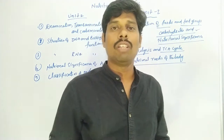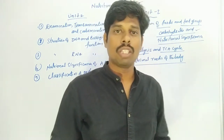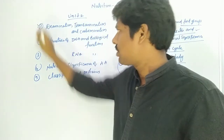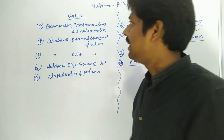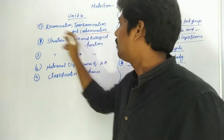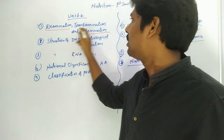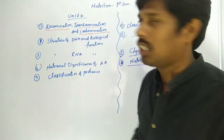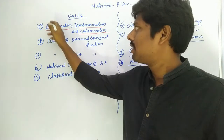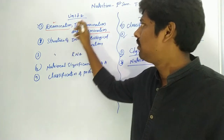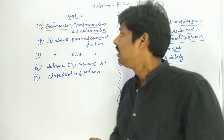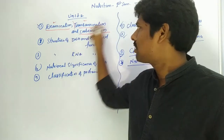You need to know the important questions that you can observe. First important question is deamination, transamination, and carbamination. Deamination is separate, transamination is separate, carbamination is separate — each one is a short answer.